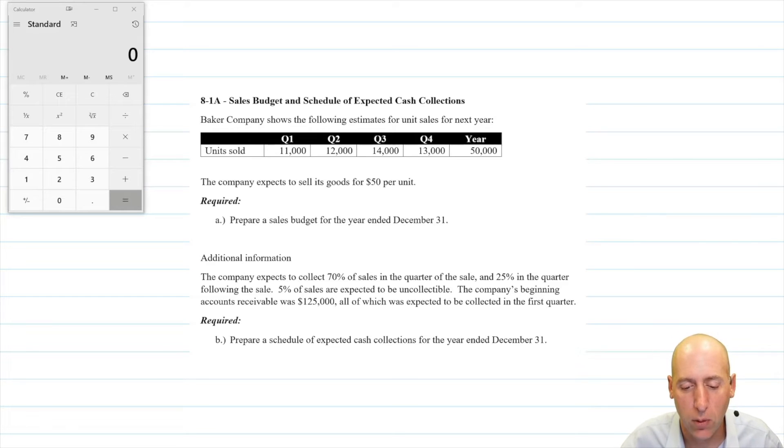Baker company shows the following estimates for unit sales for next year. So they're estimating in quarter one, they're going to sell 11,000, 12,000, then 14,000 and in quarter four, 13,000. A quarter is just a three month period. So quarter one would typically be January, February, March, then April, May, June is quarter two. Then July, August, September is quarter three. October, November, December brings us quarter four. And there is our year.